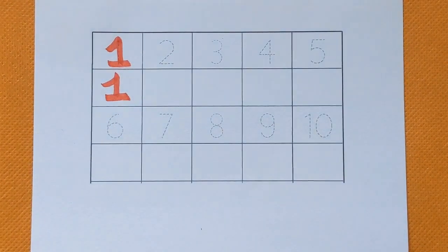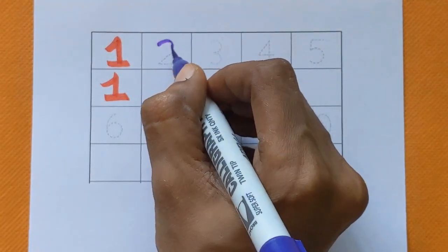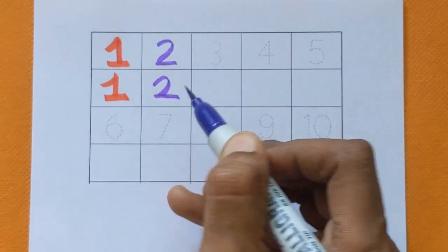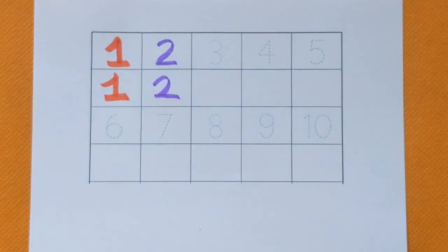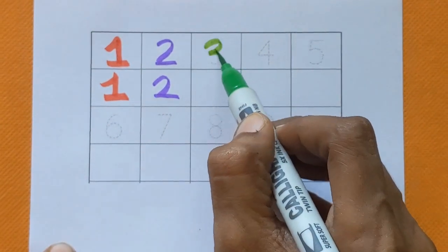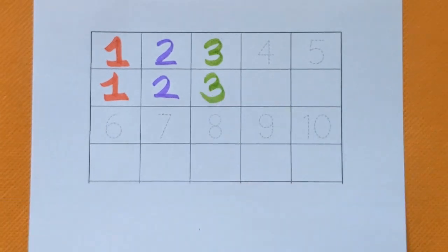One with a red color. Next is number two. Number two with a violet color. After number two, which number is this? This is number three. Number three, green color. Next is number four.